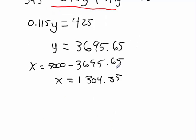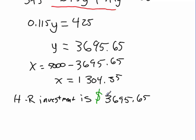Now, why did I round to two decimal places? Well, because this means my high risk investment is $3,695.65. So, my low risk investment is $1,304.35.